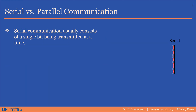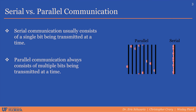There are two main forms of digital communication. There is serial communication, which usually consists of a single bit being transmitted at a time, and then there is parallel communication, which always consists of multiple bits being transmitted at a time.